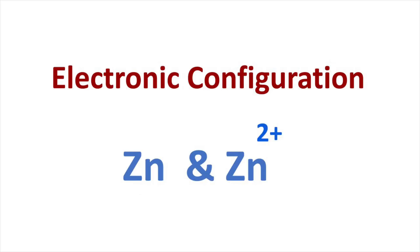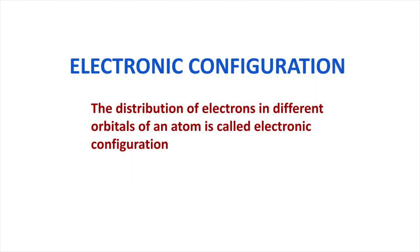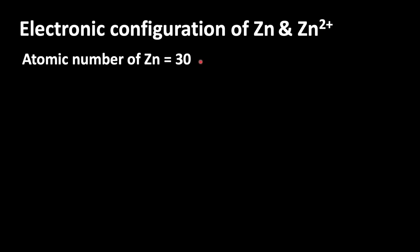Welcome to Aurora Chemistry for Everyone. In this video, let us analyze how to write the electronic configuration of zinc and its ion zinc 2 plus. The distribution of electrons in different orbitals of an atom is called electronic configuration.